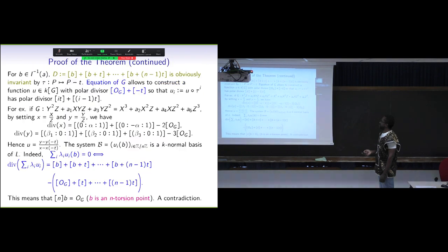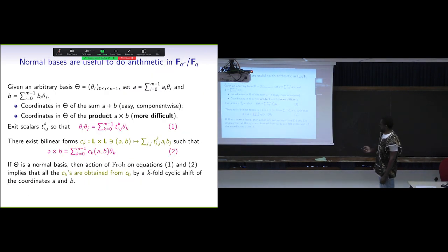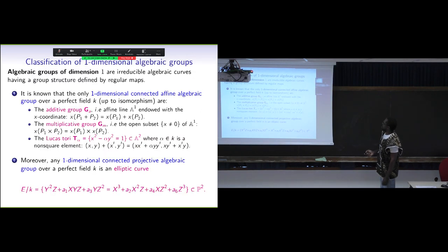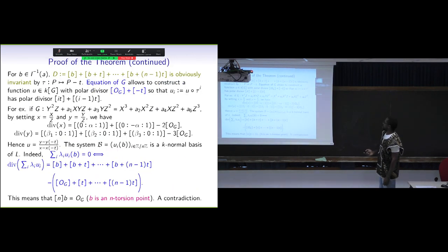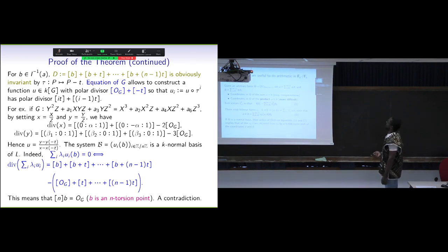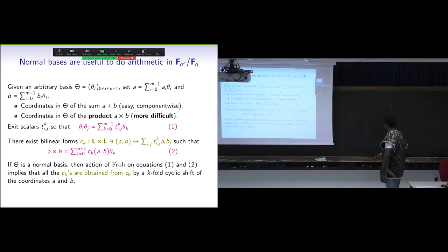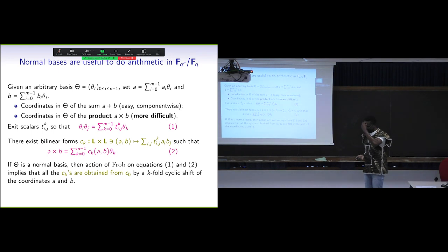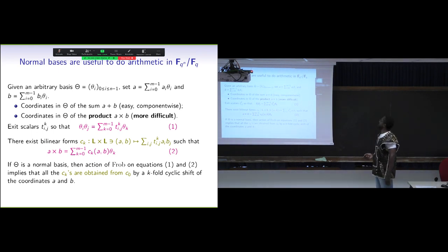We have shown that it is a normal basis. Now I want to show the properties coming from normal bases for doing finite field arithmetic. Why are normal bases useful? Because if you have an arbitrary basis and want to do arithmetic in a finite field extension, you need to handle both addition and multiplication. Addition is easy — it is component-wise — but multiplication can be more difficult.